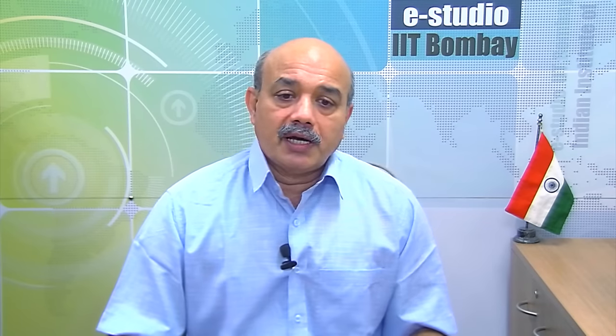But what was observed by Geiger and Marsden was something quite different. A fraction of alpha particles deflected by as large as 150 degrees. So this was quite a large deviation from the predictions of Thomson's model.